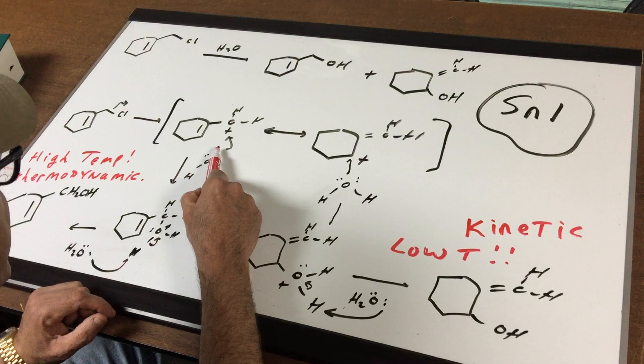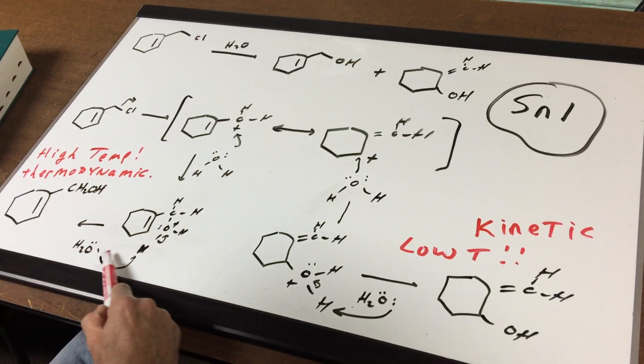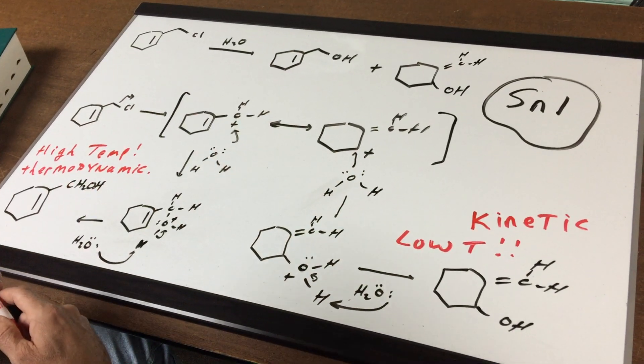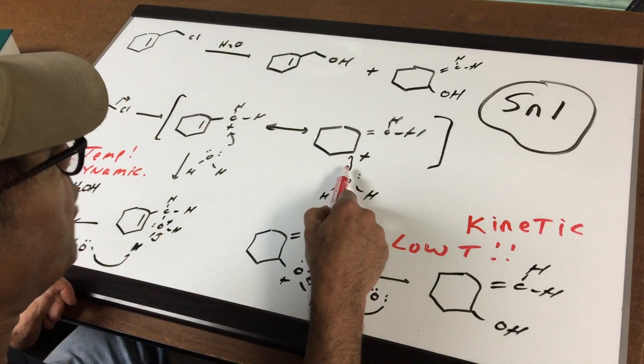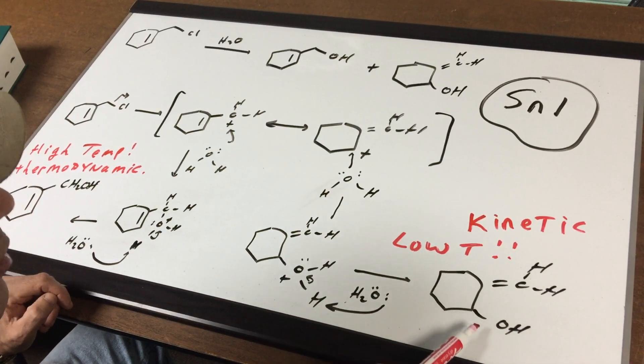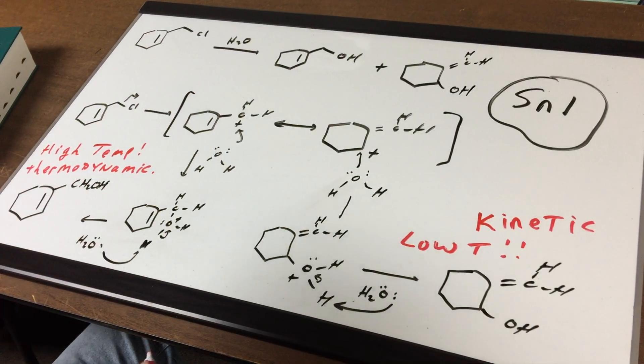If you attack this first structure with the water and you pull off an H, that would give product number one. And if you attack this carbocation and pull off an H, you get product two. Now, I'm going to push this a little further. Which do you think would be the major product?